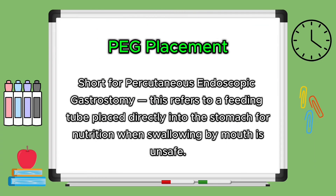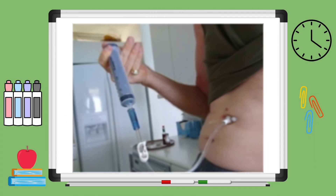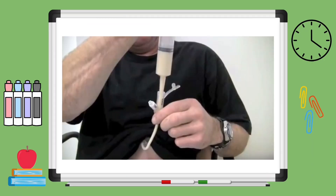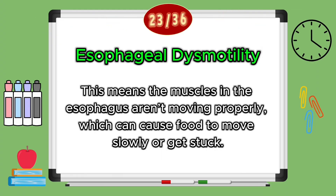A PEG placement refers to a feeding tube placed directly into the stomach for optimal nutrition when swallowing by mouth is unsafe. If your results show moderate to severe or severe dysphagia, a PEG tube will most likely be recommended. Esophageal dysmotility means the muscles in the esophagus aren't moving properly, which can cause food to move slowly or even get stuck.